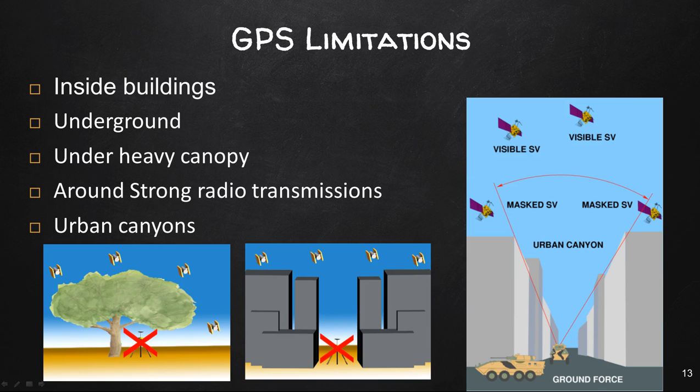Ways that we can limit GPS error or limits on GPS itself are inside buildings, it does not work, underground, if you're in caves it won't work, under heavy tree canopy it won't receive the signal, around strong radio transmission lines causes problems, and urban canyons, which is shown here in the two right images, where you'll have a lot of interference from bouncing off the buildings or you won't see enough satellites because you're blocked in these areas.